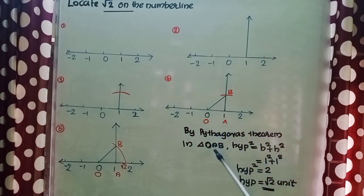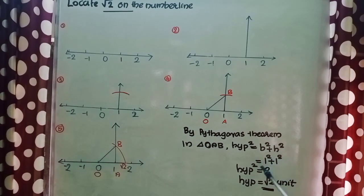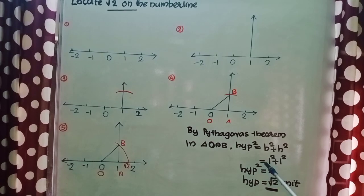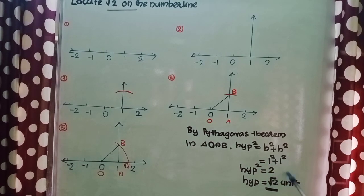In triangle OAB by Pythagoras theorem, hypotenuse square equal to base square plus height square. That is equal to 1 square plus 1 square. So we get hypotenuse square equal to 2. Therefore, hypotenuse equal to root of 2, that is equal to root 2 unit.